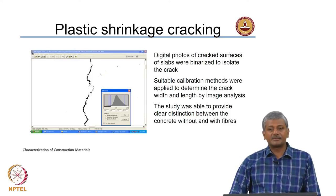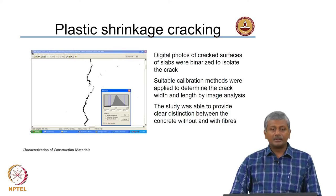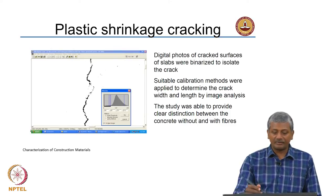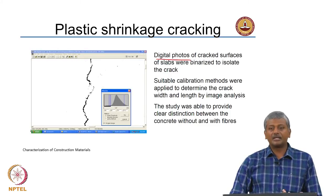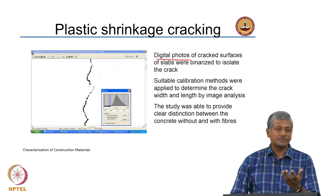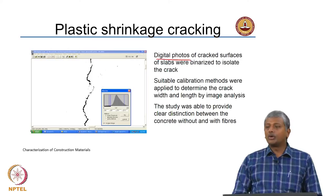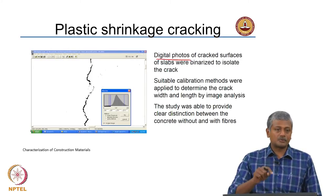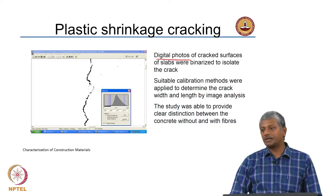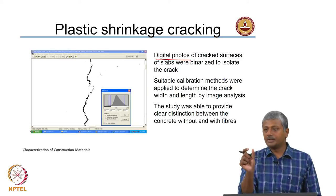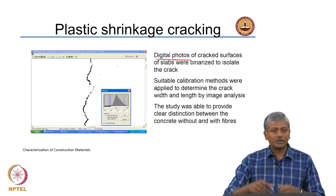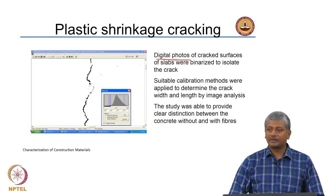This is another example of image analysis binarization applied to an image of a crack that appeared because of plastic shrinkage. Image binarization has been done in this case on a digital photograph, not a microscopic image. These were binarized to isolate the crack. For macro features — for example, cracks developing during loading of a beam — these can be imaged easily using a digital photograph and calibrated fairly easily by pasting graticules or rulers right on the sample.